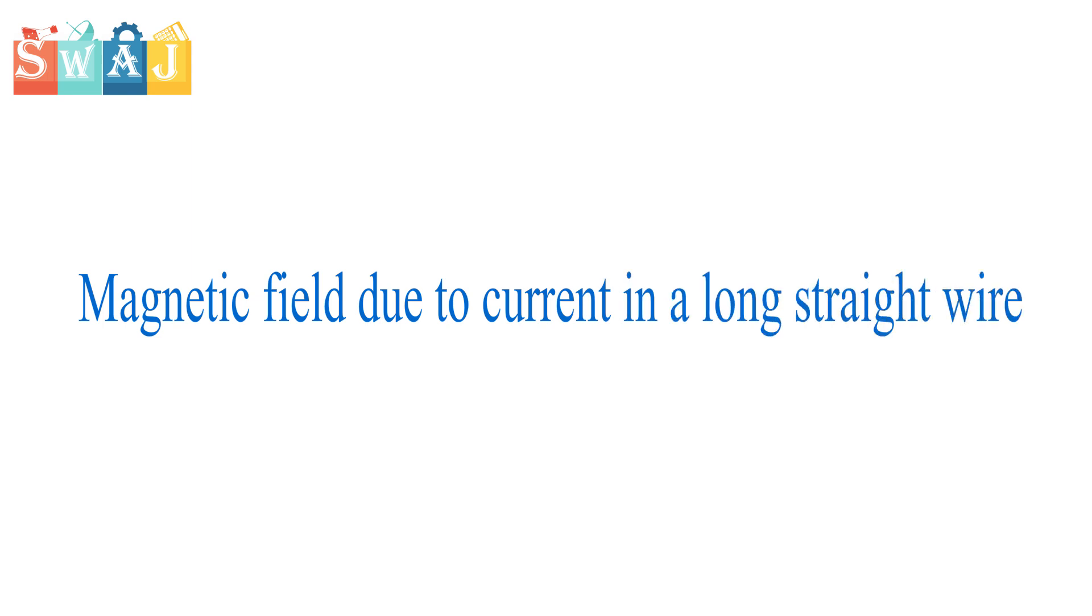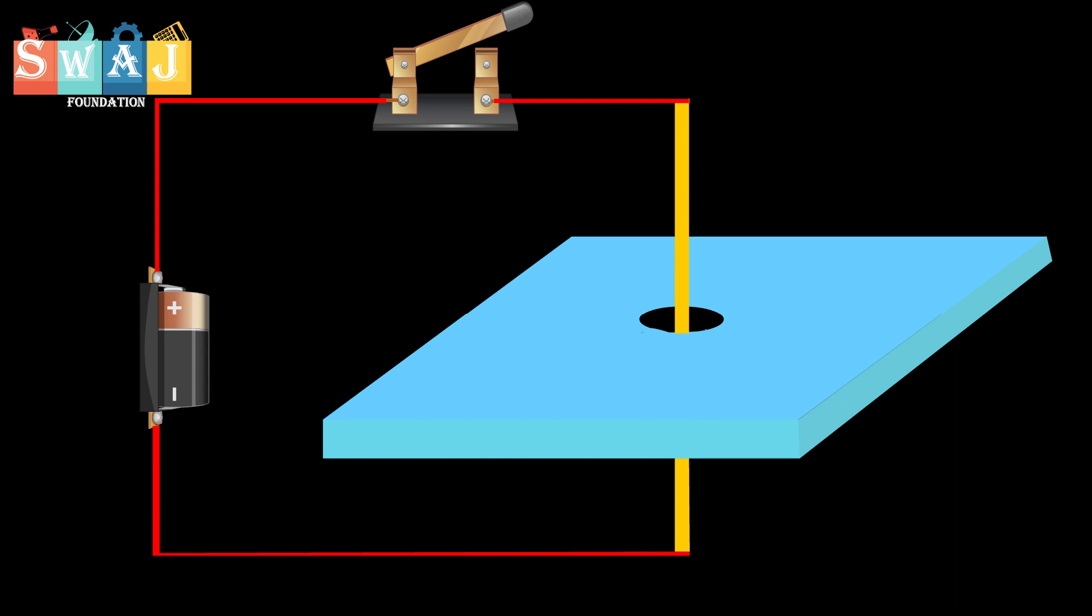Magnetic field due to current in a long straight wire. Take a straight thick copper wire and pass it vertically through a hole in a horizontal piece of cardboard. Place small compass needles on the cardboard along a circle with the center at the wire.